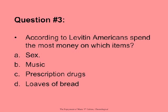The text is called 'Your Brain on Music' by Daniel Levitin — he's a musicologist and neurologist with a lab at McGill University. A sample question: 'According to Levitin, Americans spend the most money on which items — sex, music, prescription drugs, or loaves of bread?' There is a right answer in the book. The answer is C — prescription drugs — and the students crack up. I say, what kind of a course is this? Music. Books about music.